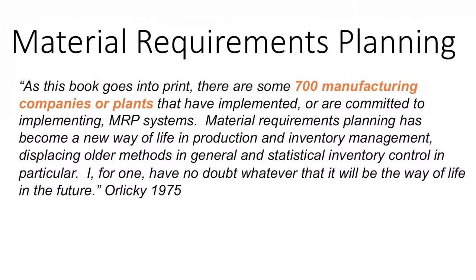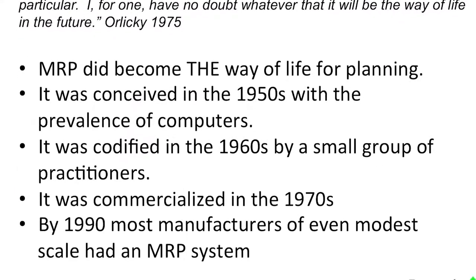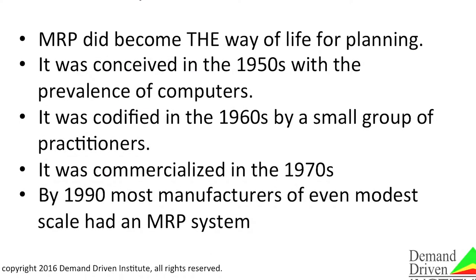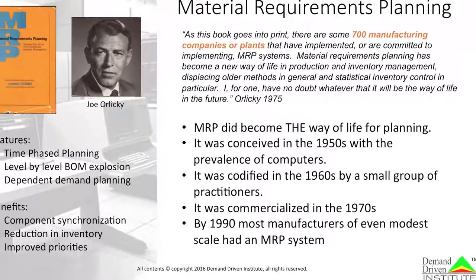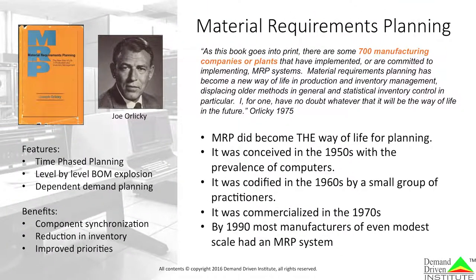In 1975, only 700 instances of MRP existed in the world. With the release of Orlicky's book and others like it, MRP quickly proliferated throughout the world. It became the way of life for planning. But we should not overlook the fact that MRP was conceived in the 1950s, codified in the 1960s, and then commercialized in the 1970s, and by 1990, most manufacturers had it. Today, almost every supply chain is dominated by MRP systems conveying signals up and down the chain to each other.